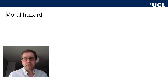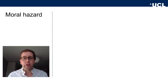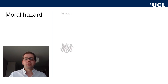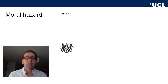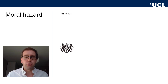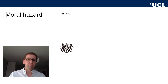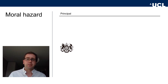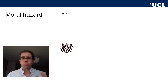Let's clarify some of these terms relating to principal-agent models and see another example of moral hazard in action. In general, principal-agent models consist of a principal who wants someone to perform a task for them. Let's say our principal in this next example is the British government.